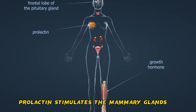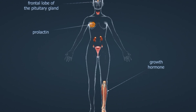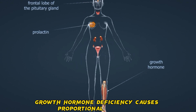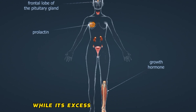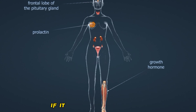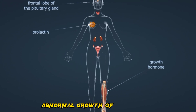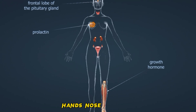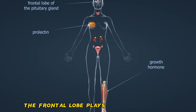The frontal lobe of the pituitary gland secretes prolactin and growth hormone. Prolactin stimulates the mammary glands to produce milk. Growth hormone deficiency causes proportional dwarfism, while its excess causes gigantism, or if it develops in adult age, acromegaly.